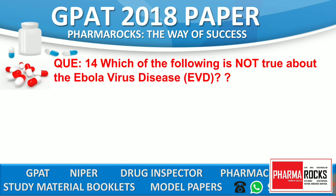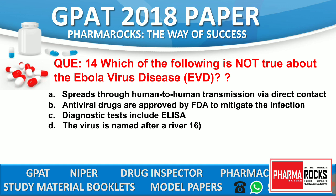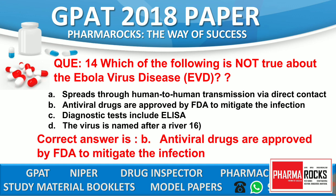Question number 14: Which of the following is not true about Ebola virus disease (EVD)? Option A: It spreads through human-to-human transmission via direct contact. Option B: Antiviral drugs are approved by FDA to mitigate the infection. Option C: Diagnosis includes ELISA. Option D: The virus is named after a river. The correct answer is B — there are still no drugs approved by the FDA to cure Ebola virus disease.